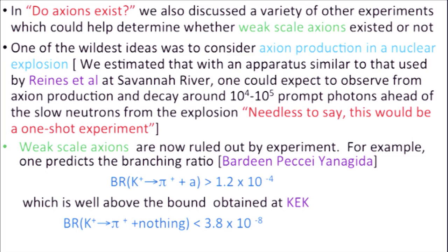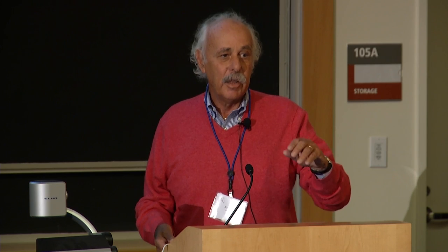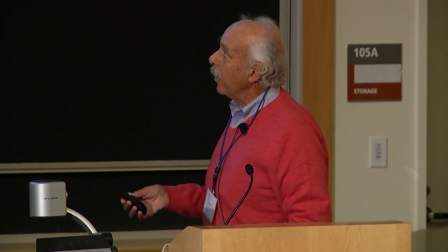It turns out that weak-scale axions — axions that have the scale of weak interactions — are actually ruled out by experiments, for example in kaon decay. There's a bound on K → π plus axion, which experiments at KEK are way below. So you know that there are no weak-scale axions. Although we almost ruled them out in our paper, they eventually were ruled out by this kind of experiment.